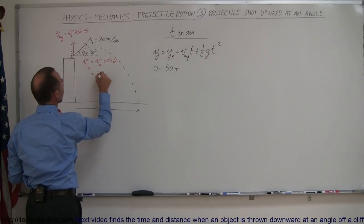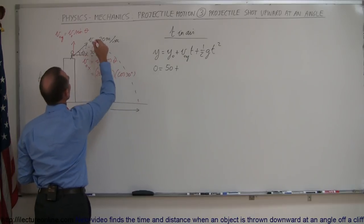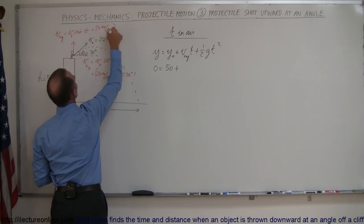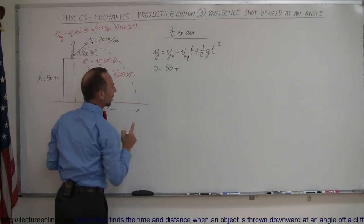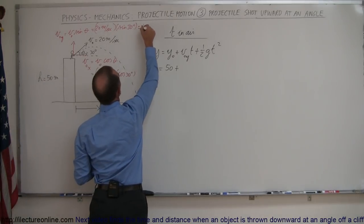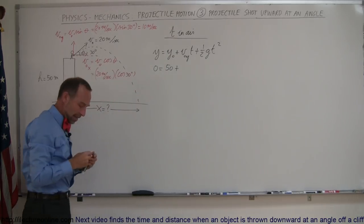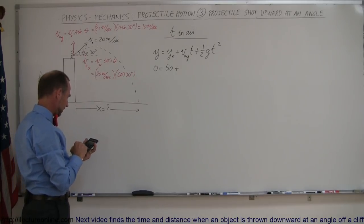So that becomes 20 meters per second times the cosine of 30 degrees and this becomes 20 meters per second times the sine of 30 degrees. And of course the sine of 30 degrees that's equal to one-half. So one-half times that is 10 meters per second.